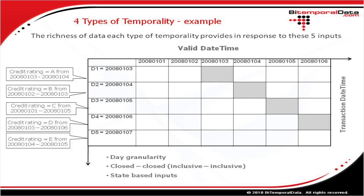You'll notice that the time periods associated with these events are in what is referred to as closed-closed format — or in layman's terms, inclusive-inclusive. So that means, for example, the credit rating is A for the third and the fourth, meaning the credit rating was A for all day on the third and all day on the fourth — not into the fifth and not into the second. This is an important concept when working with temporal data, as many physical storage techniques use the closed-open format for storing temporal data because of advantages for completeness and querying.